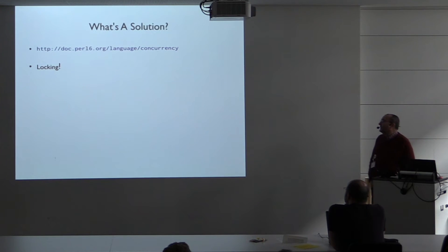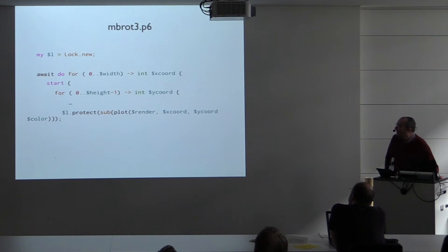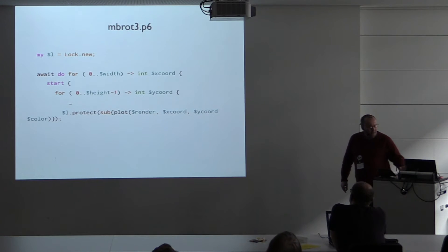So I went back to the Perl 6 website. I did what I should have done at first, which I didn't because I was a programmer impatient, just wanting to bang some examples out. And I read about the concurrency. And I realized there was a locking primitive. I just create a lock here. And then I have a critical section here, which protects the plot. That ensures that the plot only happens on one thread at once.